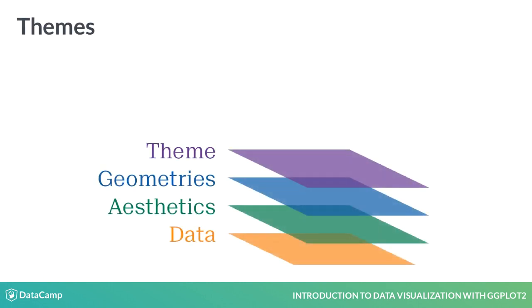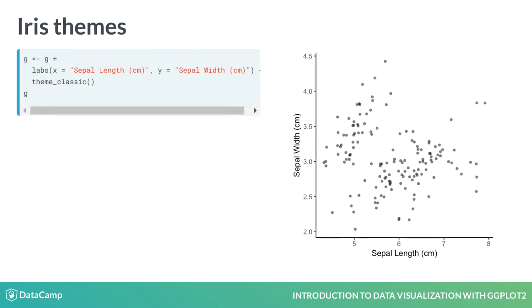The next layer we'll look at is the themes element. It controls all the non-data ink on our plot, which allows us to get a nice looking, meaningful and publication quality plot directly in R.